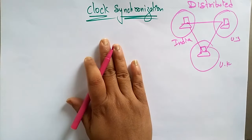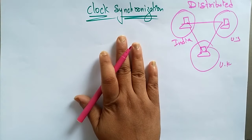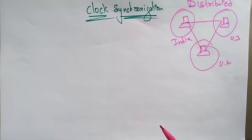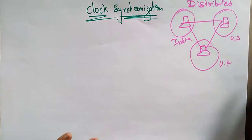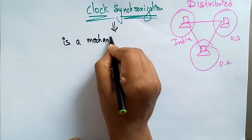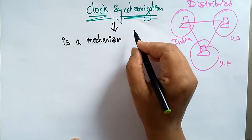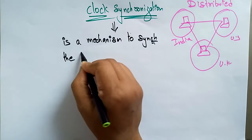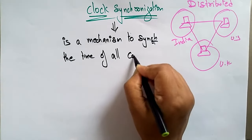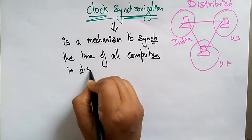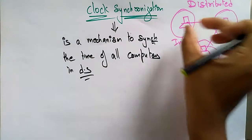That is the concept I want to explain in this video: clock synchronization. First, what is clock synchronization? A clock synchronization is a mechanism to synchronize the time of all computers in a distributed environment or distributed system.